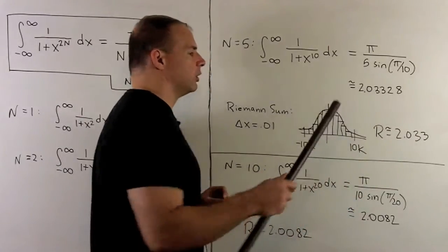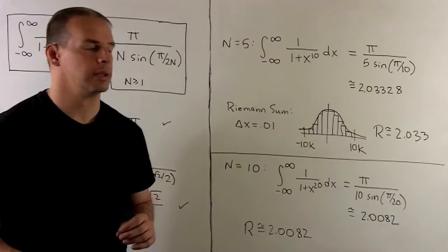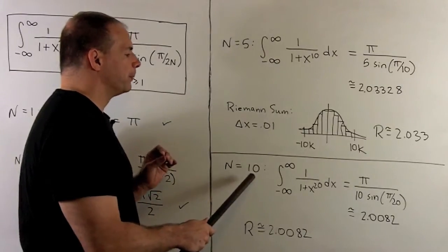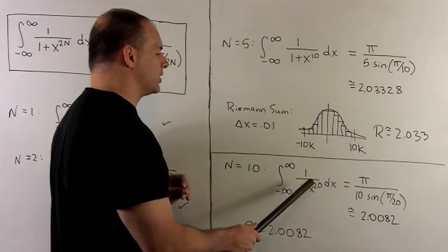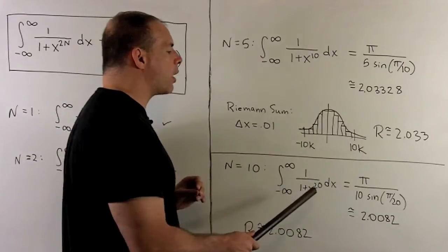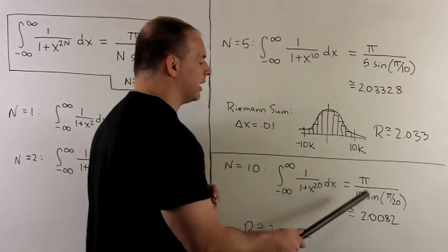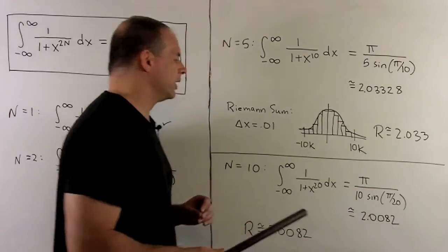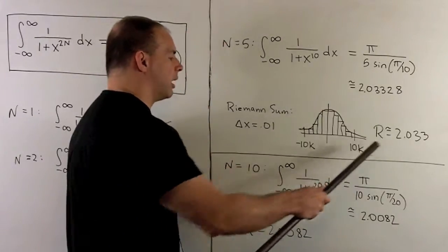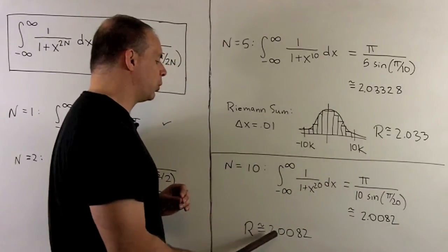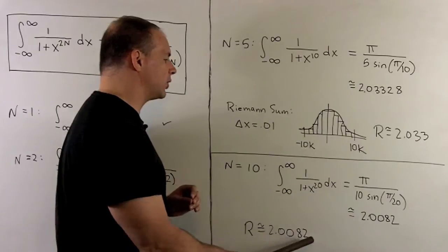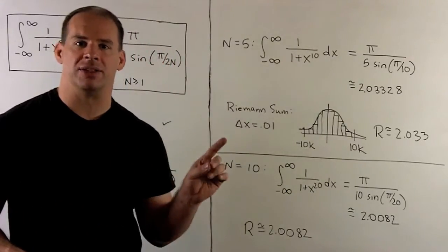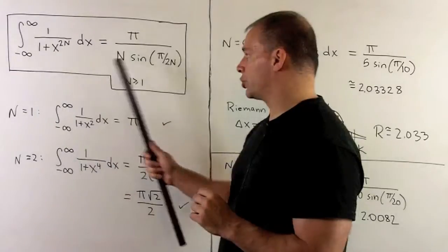So that's pretty close. If I let n equal 10, we're looking at 1 over 1 plus x to the 20th power. The formula gives 2.0082, and working out the same Riemann sum with this function also gives 2.0082. So I'm convinced that this formula is true.